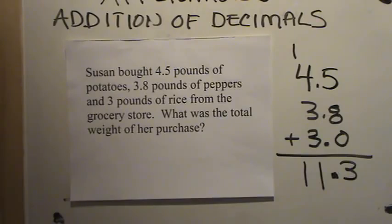Since we're interested in the total weight, 'total' means we're going to be adding. So we add up all of her purchases. She had 4 and 5-tenths pounds of potatoes, 3 and 8-tenths pounds of peppers, and 3 pounds of rice. Now 3 is a whole number, so we put it here and add a placeholder. 5 and 8 is 13, put our decimal point, carry the 1. 1 and 4 is 5, 5 and 3 is 8, then 9, 10, 11. The total weight of Susan's purchases was 11 and 3-tenths pounds.